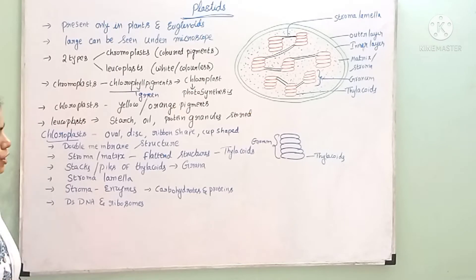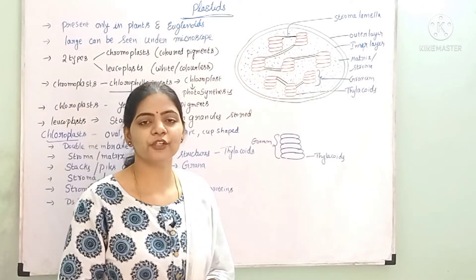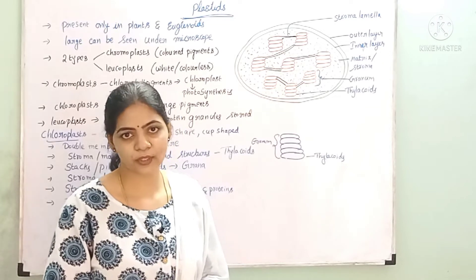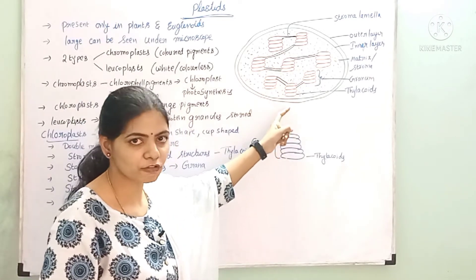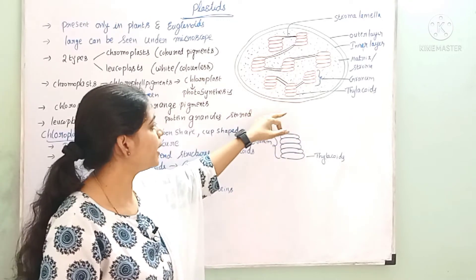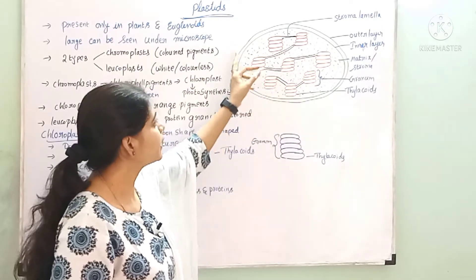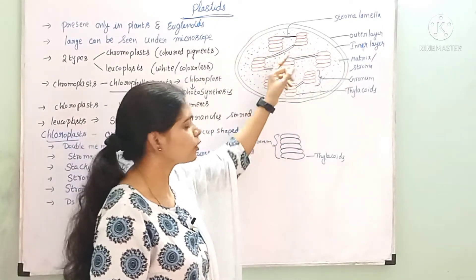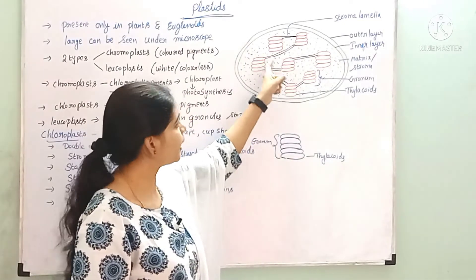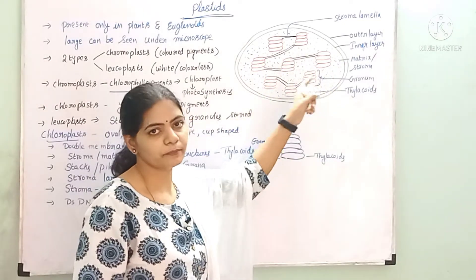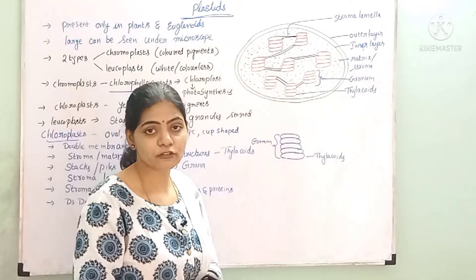Chloroplast structures are similar to mitochondria — they are called a double membrane structure. Chloroplasts are also double layered: the outer one is the outer membrane and the inner one is the inner membrane. In the inner membrane, we have a fluid-filled matrix called stroma.